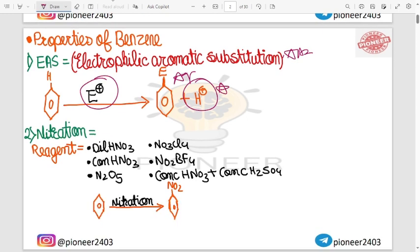Nitration is very important. To talk about the reagent, it is very important to talk about HNO3, concentrated HNO3, N2O5, NO2 BF4, concentrated HNO3, concentrated H2SO4. This way the reagent will be used in nitration. So you will be able to add NO2 to benzene. So you will remember all the reagents.